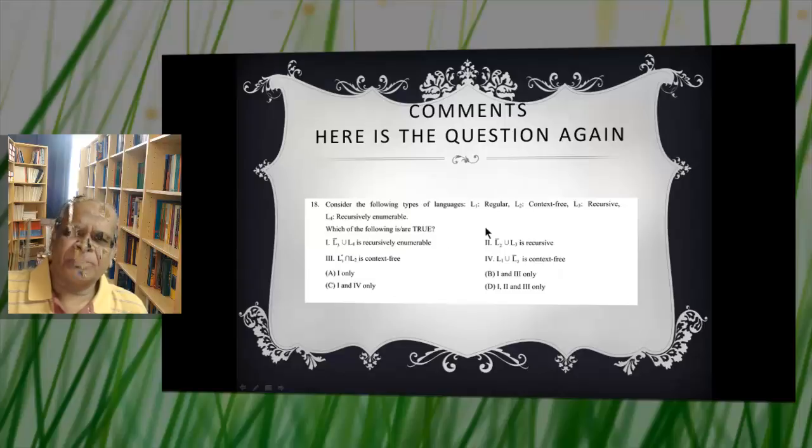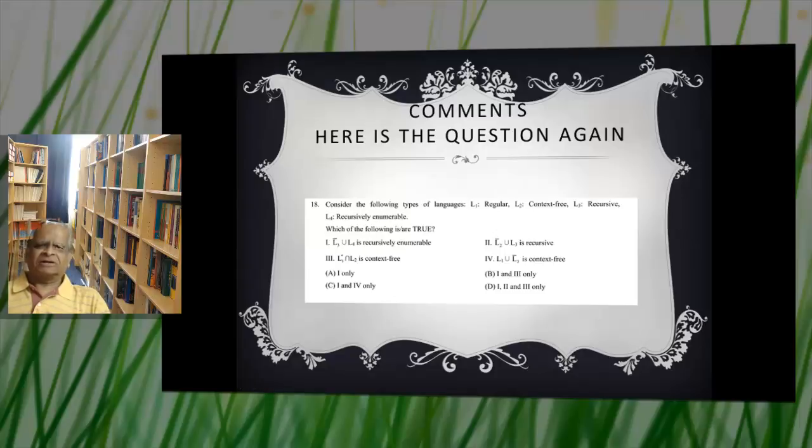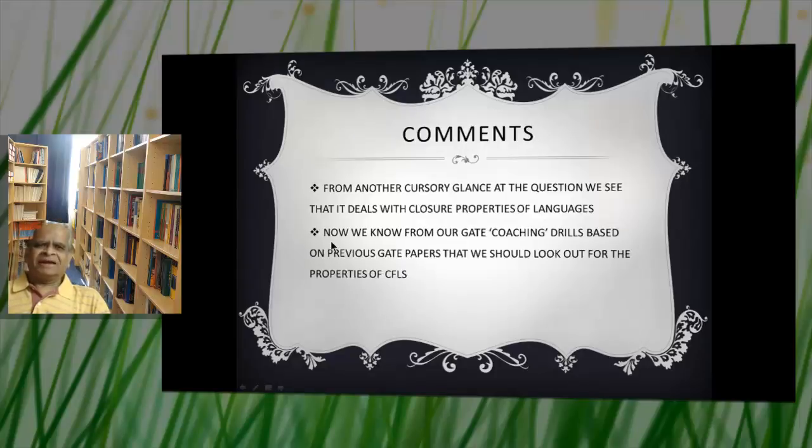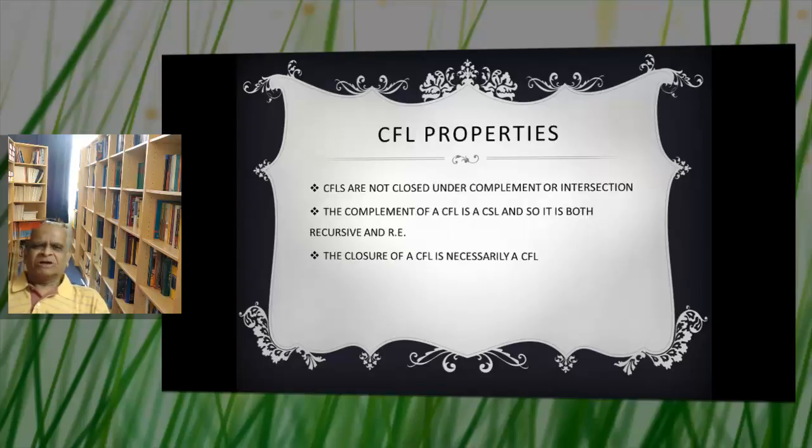We can see for example we have closure properties of regular sets which are very well behaved, closed under union intersection complement. Context-free languages are closed under union but not under intersection or complement.